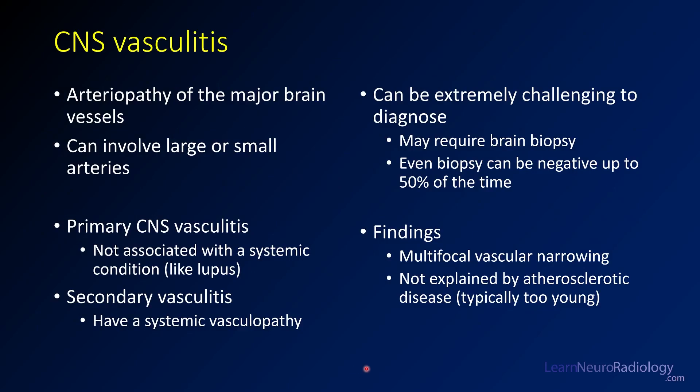This is a case of CNS vasculitis — an arteriopathy of the major brain vessels. It can involve large or small arteries. If very small end arteries are involved, you may not see anything on your MR angiogram. In this case, the larger vessels were affected. Primary CNS vasculitis is not associated with systemic conditions and has no known systemic cause. Sometimes patients have a systemic vasculopathy from a collagen vascular disease or autoimmune abnormality, which makes vasculitis more likely.